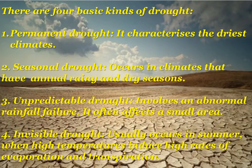There are four basic kinds of drought. Permanent drought characterizes the driest climates. Seasonal drought occurs in climates that have annual rainy and dry seasons. Unpredictable drought involves an abnormal rainfall failure and often affects a small area. Invisible drought usually occurs in summer when high temperatures induce high rates of evaporation and transpiration.